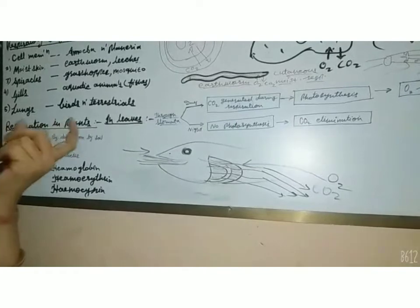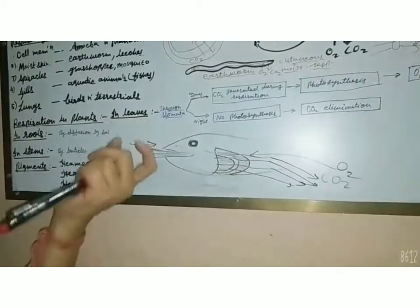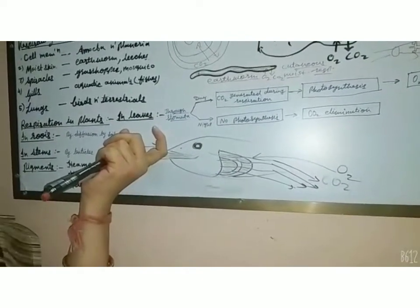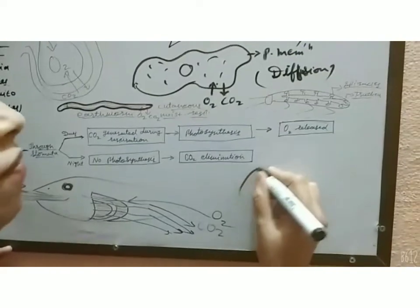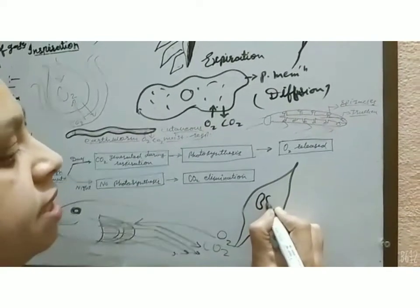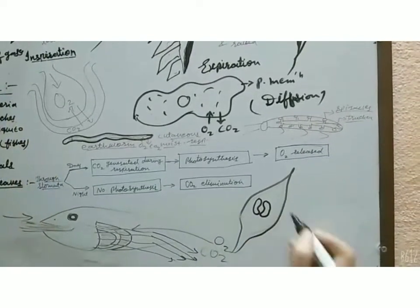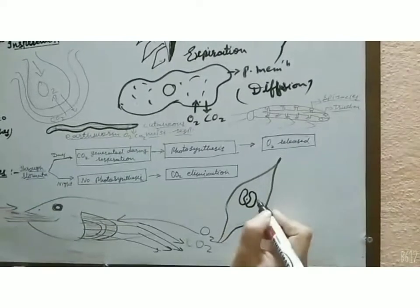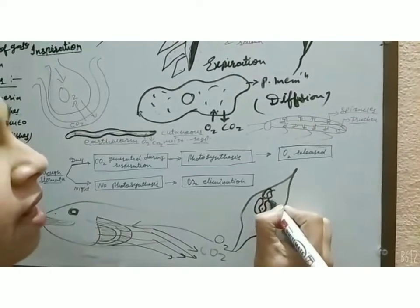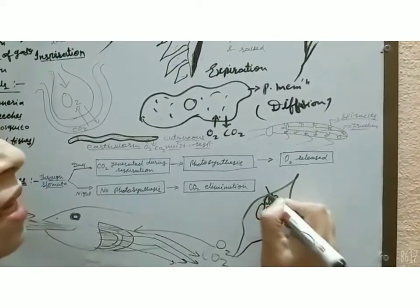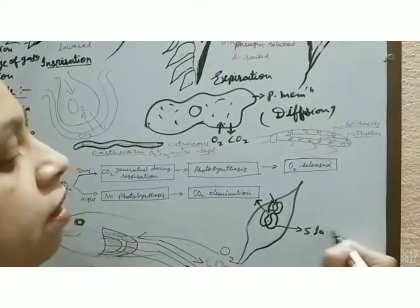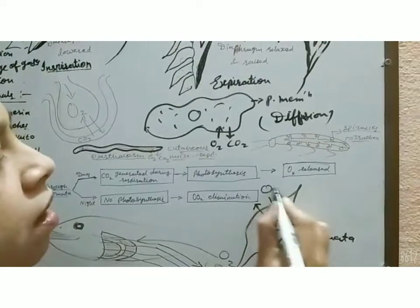The next topic is how respiration takes place in plants. In plants, the exchange of gases takes place mainly through stomata, which are present in the epidermal surface of leaves — mostly on the lower surface. This is the stomatal pore. Plants ensure that each cell and stomata remain in contact with the air so that exchange may take place easily. With the help of stomata, gaseous exchange takes place in the plant.